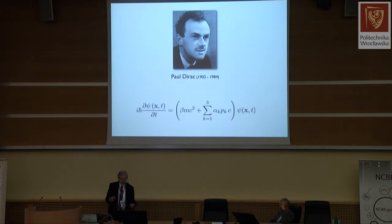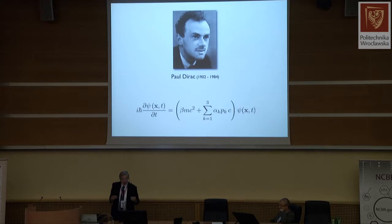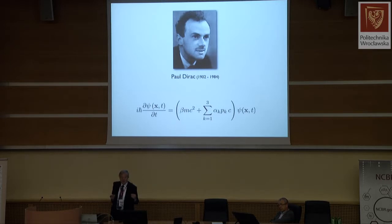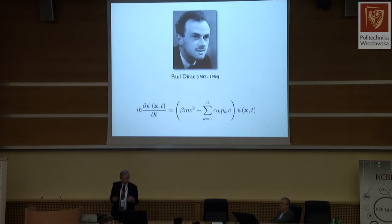Then Dirac succeeded in formulating a relativistic generalization of the Schrödinger equation, which seemed overwhelmingly successful. It not only included relativistic effects that give rise to the fine structure, but also described the spin of the electron and even the existence of anti-electrons — positrons. This seemed to be a triumph of theory, and people felt this theory is so beautiful it has to be right.